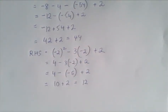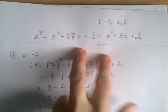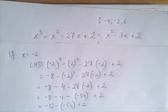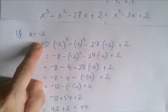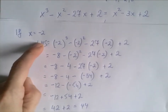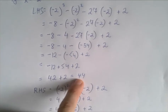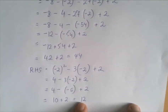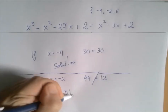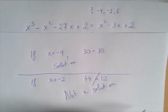So the right-hand side is 12. When we substituted x equals negative 2 into both sides, we got that the left-hand side was 44 and the right-hand side was 12, which means that negative 2 is not a solution of the equation.